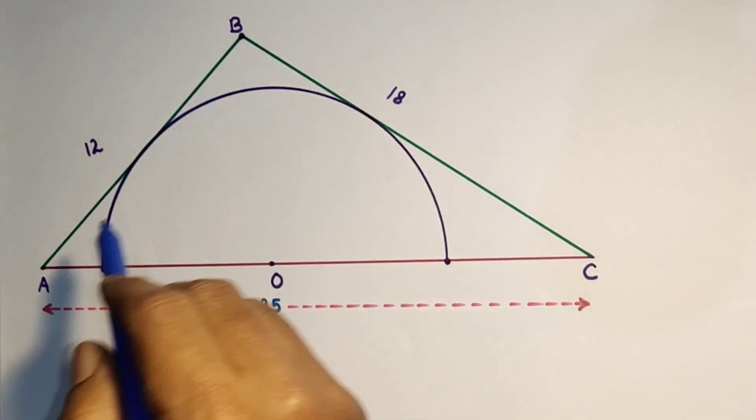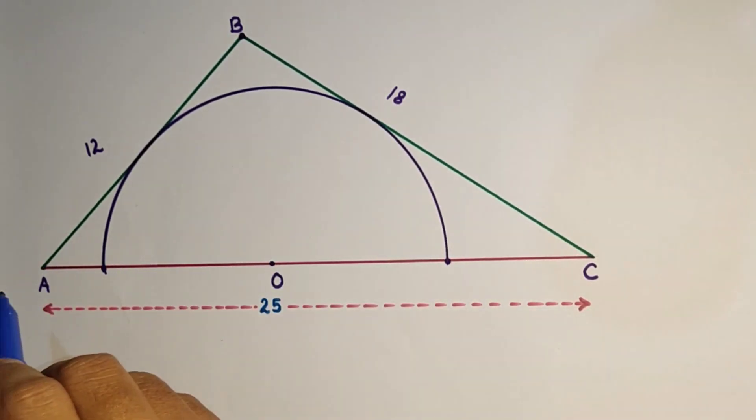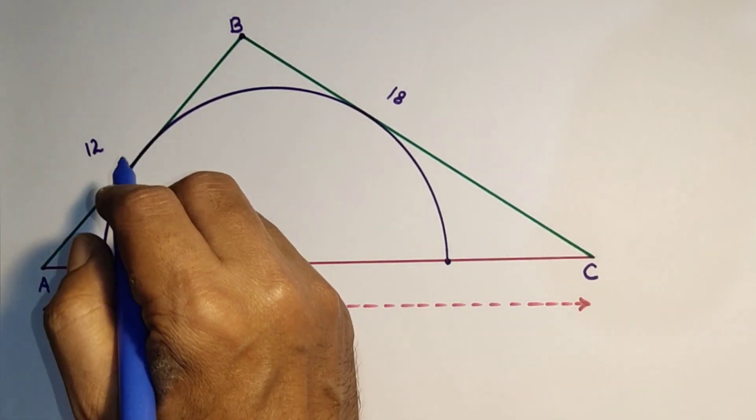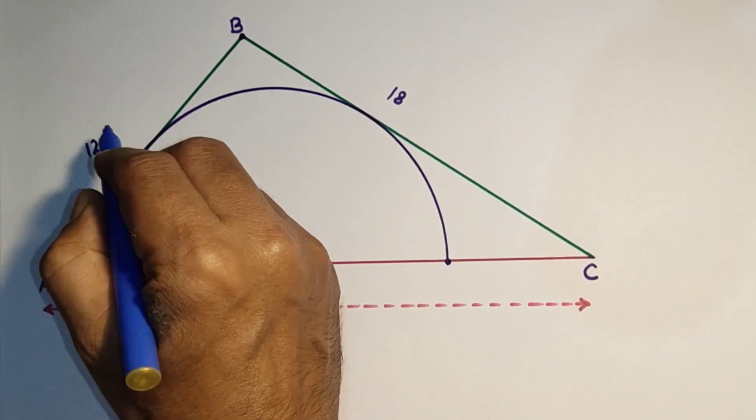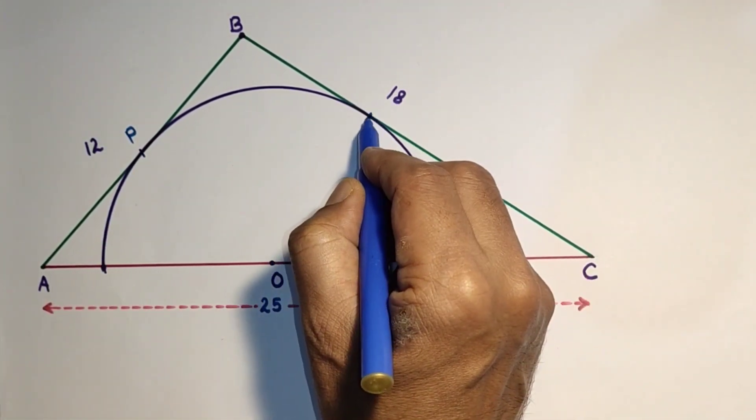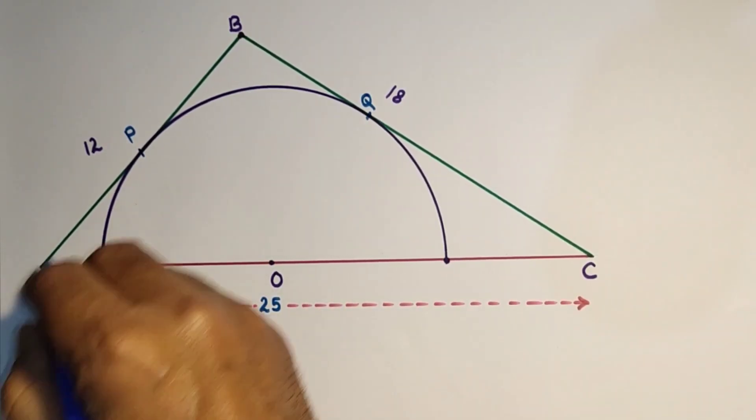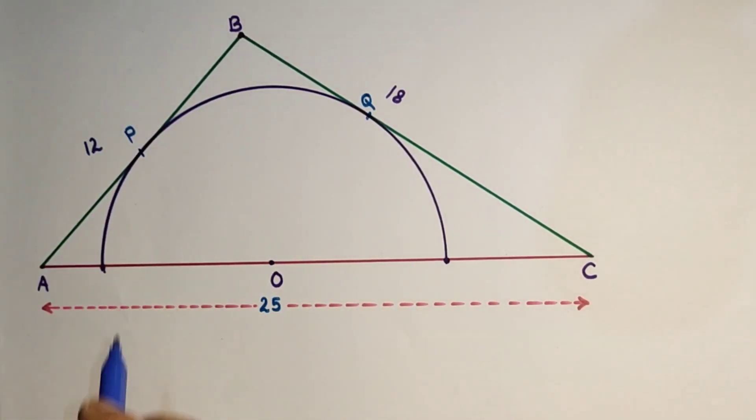This AB touches the semicircle and this side BC touches the semicircle. Let the point of contact be P here and this point is Q. So we are given the length of side AB as 12 units and BC length is 18 units. AC length is 25 units.